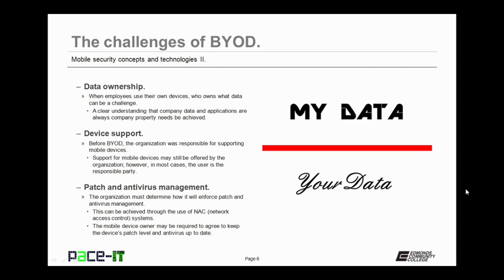Then there's patch and antivirus management. The organization must determine how it will enforce patch and antivirus management, as these can be a critical part of network security. Patch and antivirus management can be achieved through the use of network access control systems, but the mobile device owner may be required to agree to keep the device's patch level and antivirus up-to-date.